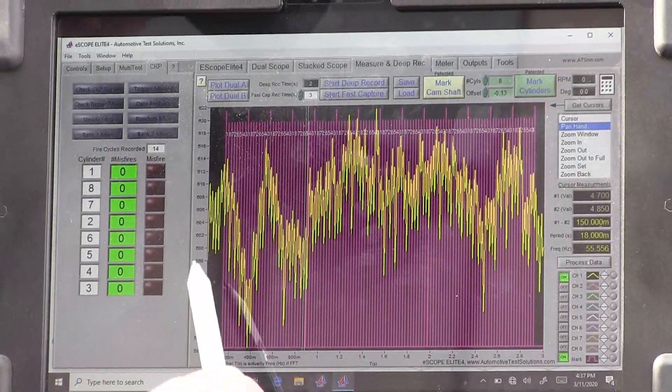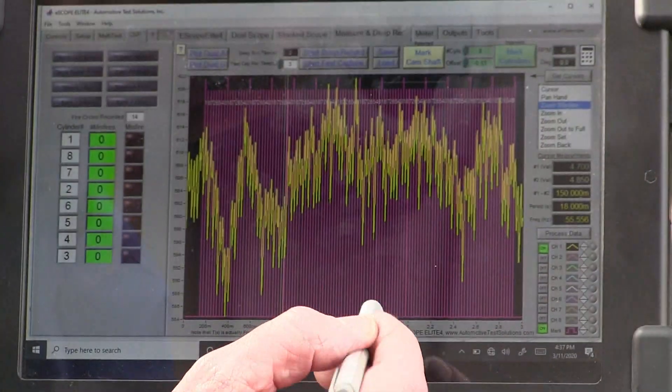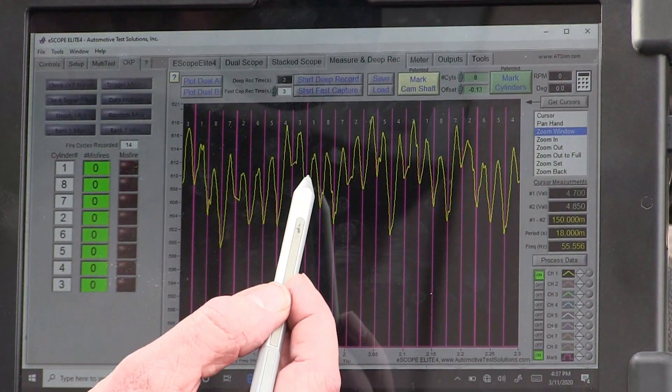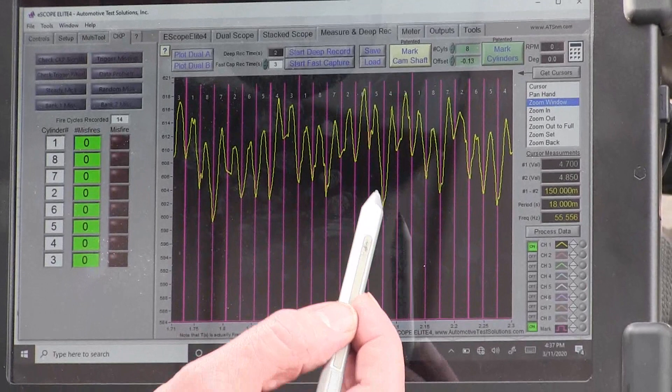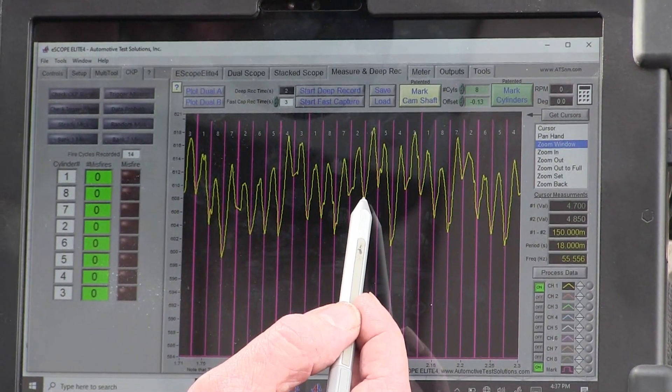So at this time, we have no misfires. What we're looking at here is this data, and as this data is going, each one of these pink lines is top dead center. The piston slows down, compressing the gas.